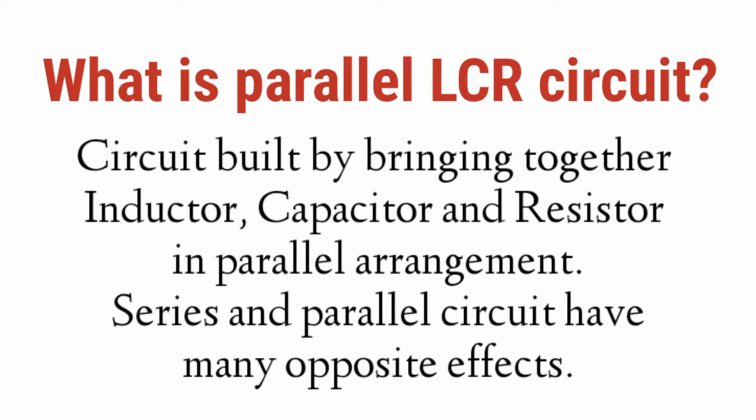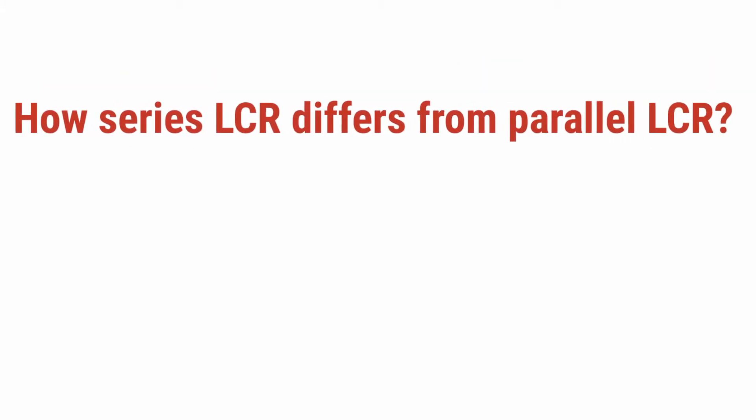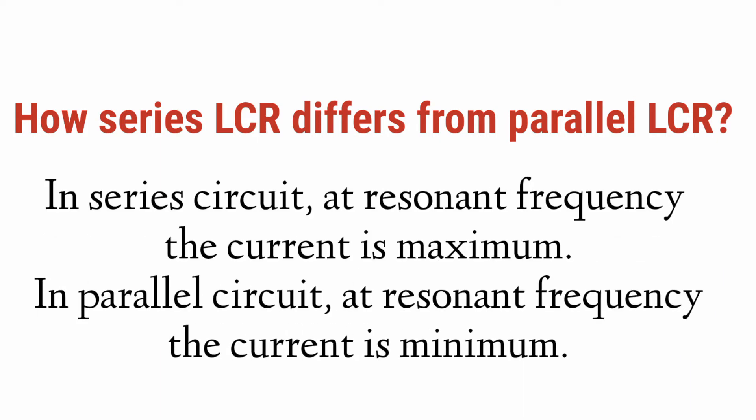Both series and parallel circuits have the same components — it's just the arrangement that differs, and due to this, opposite effects are seen. How does a series LCR differ from a parallel LCR? In a series circuit, at resonant frequency the current value is maximum, whereas in a parallel circuit, at resonant frequency we get the minimum value of current.